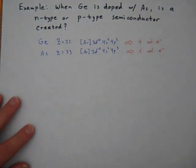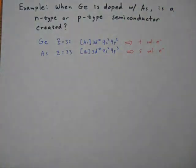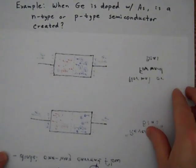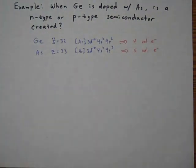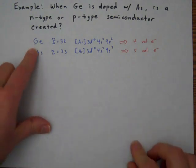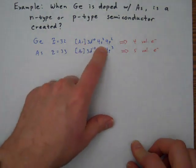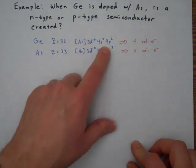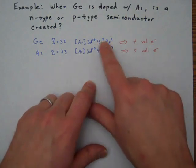So let's do a quick example. So this question asks, is this an N-type or P-type semiconductor that is created? So let's look at the electron configurations of germanium. So here's germanium. It has atomic number 32. And here's its electron configuration. 3d10, 4s2, 4p2. So if we count the valence electrons, the n=4 shell is the outermost shell. So 1, 2, 3, 4. 4 valence electrons.